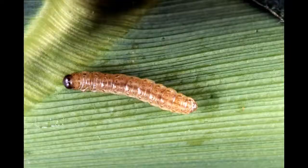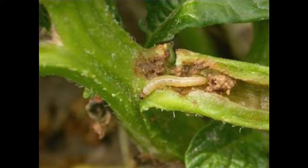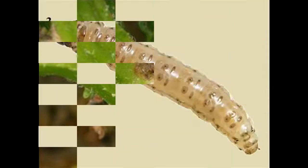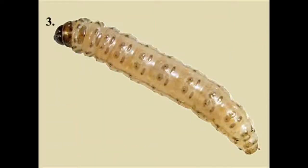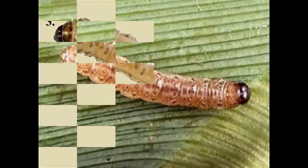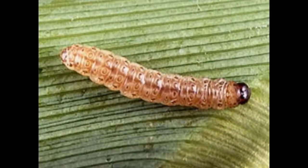The Peralid borers are the most common and destructive, and usually have high host specificity. The Noctuidae borers are polyphagous and only occasionally cause economic losses to the rice crop.